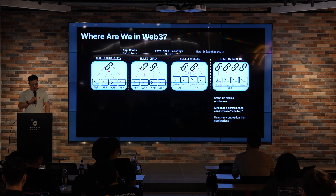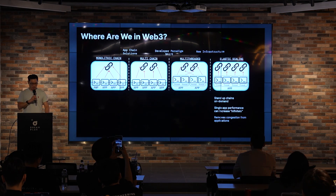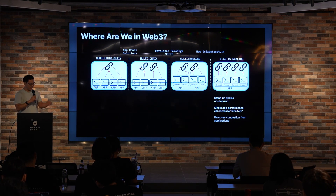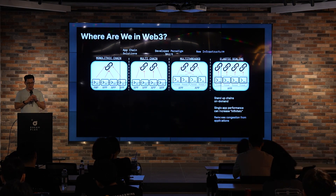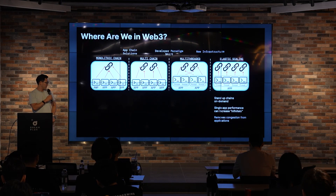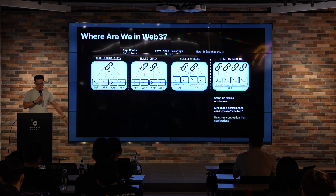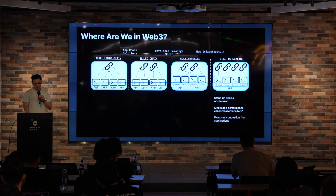Instead of worrying about deploying on Ethereum and then Polygon, you could go to a service and say, 'I want four chains of this configuration,' and get those chains stood up to spread your application across — similar to AWS in Web2. You'll be able to spin chains up on demand, single app chain performance can scale almost infinitely because you're spreading across all these different chains, and you can remove congestion entirely because you have elastic computation in Web3.